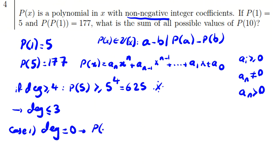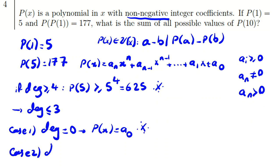Case 1: if the degree is 0, then p of x equals a_0, a constant. But p of 1 equals 5 and p of 5 equals 177, and a constant polynomial cannot take two different values, so this is a contradiction. Case 2: degree is 1, so p of x equals a_1 x + a_0.